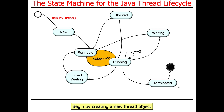Threads begin when you create a new thread object. If you have a class called myThread that extends the Thread class, then when you say new myThread, you're going to create a new thread, and that will transition you into the NEW state. When a thread is in the NEW state, it doesn't actually do any computation — it just exists. It has come into being.